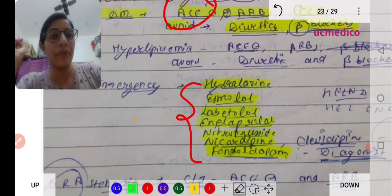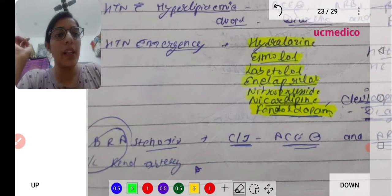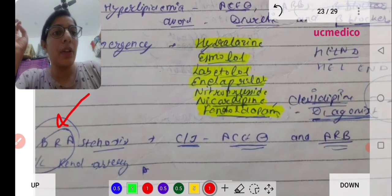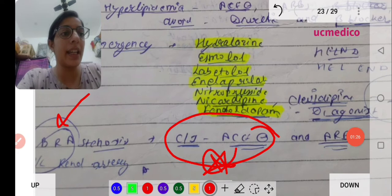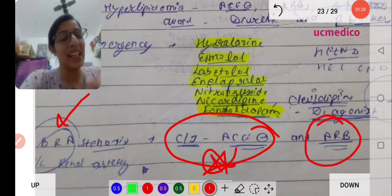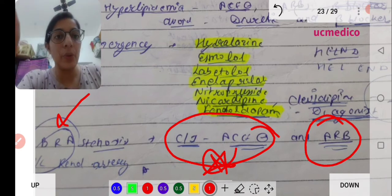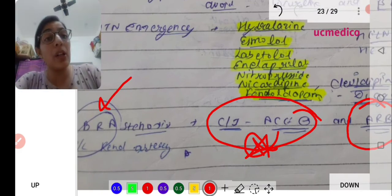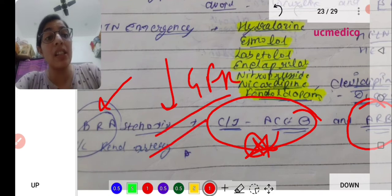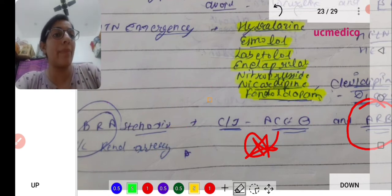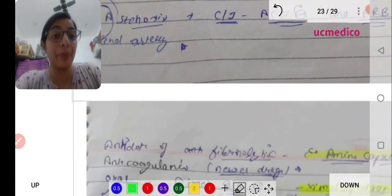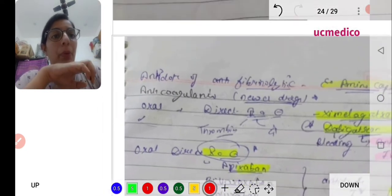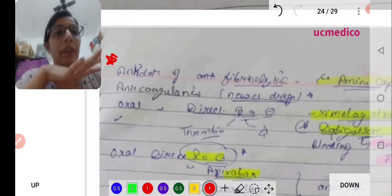Bilateral renal arterial stenosis - the drug which is contraindicated is ACE inhibitors and ARBs. When there is only unilateral renal arterial stenosis, you can give this drug. But when there is bilateral renal arterial stenosis, these drugs cannot be given because it further decreases the GFR and causes vasoconstriction. Aspirin helps in vasodilation and prevents the formation of prostaglandins.